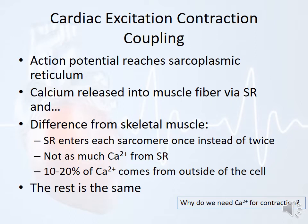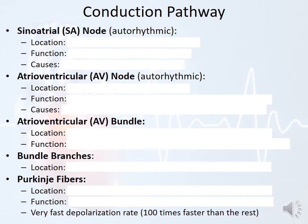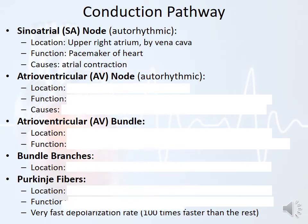Everything else is the same between cardiac excitation-contraction coupling and skeletal muscle. Now, the conduction pathway has five different steps. The sinoatrial node is found in the upper right part of the atrium near the vena cava. Its function is to be the pacemaker of the heart — it causes atrial contraction. After the SA node fires, that action potential is sent down the atria on both sides — right and left — and makes its way to the atrioventricular node or AV node, found right next to the tricuspid valve between the right atrium and the right ventricle.